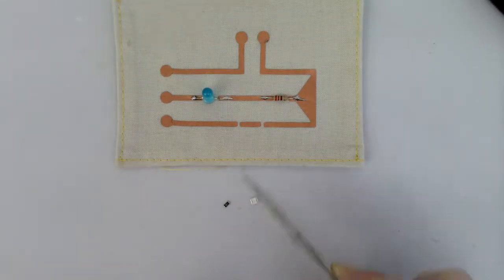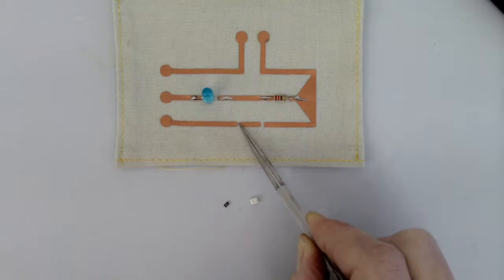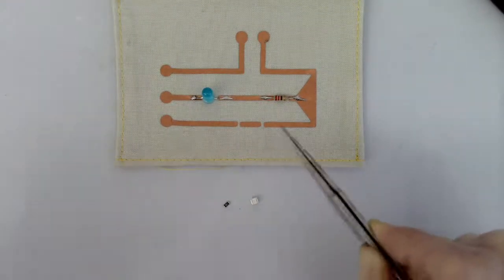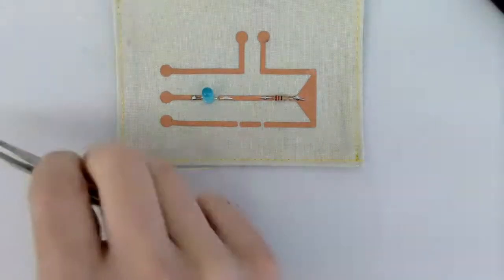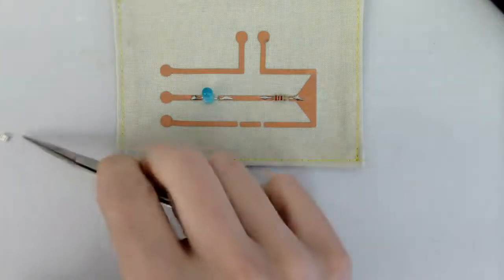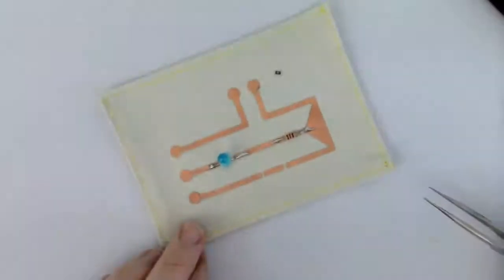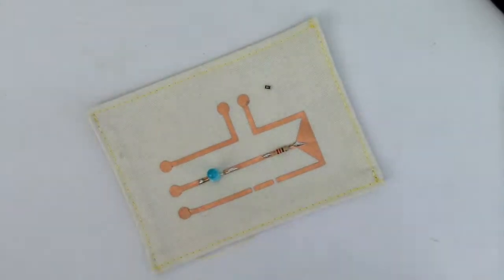Or we can lay down some solder on our conductive fabric and then heat it up and let the components sort of attach to it that way. So we'll try both options. We'll start with our resistor. I'm gonna go ahead and start with the option of placing it on the conductive fabric. So I've got my soldering iron heated up, I'm gonna clean it a little bit.